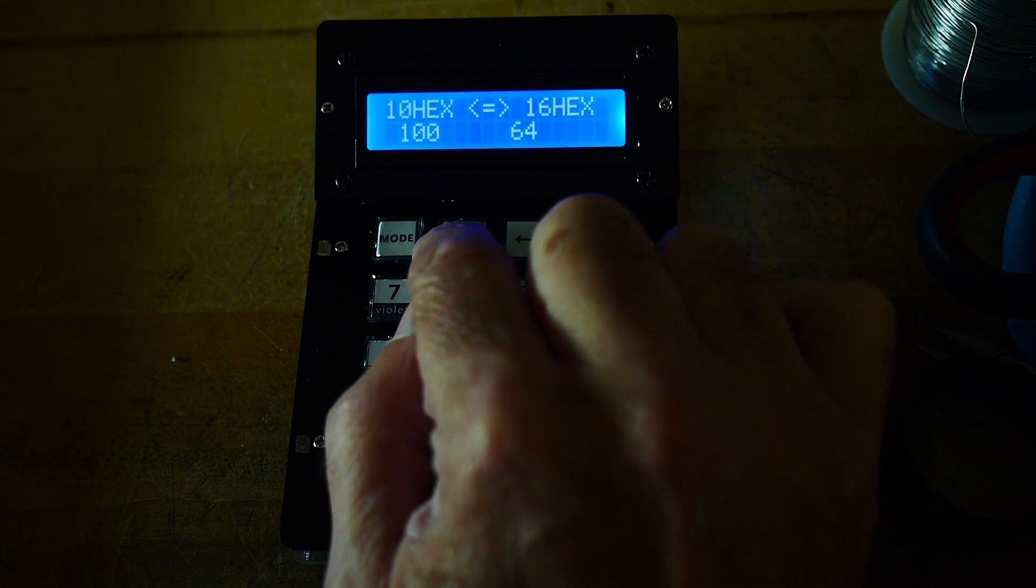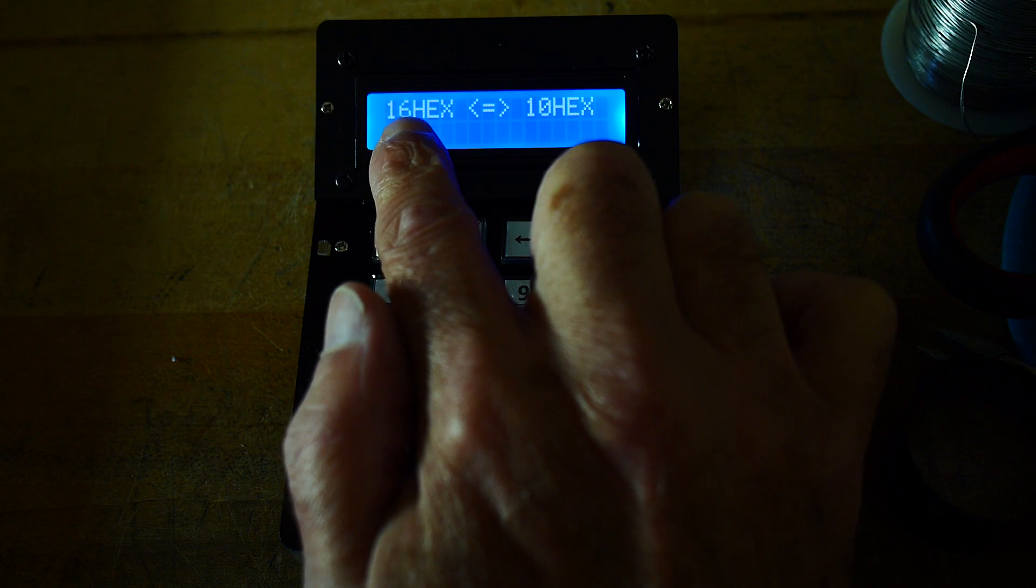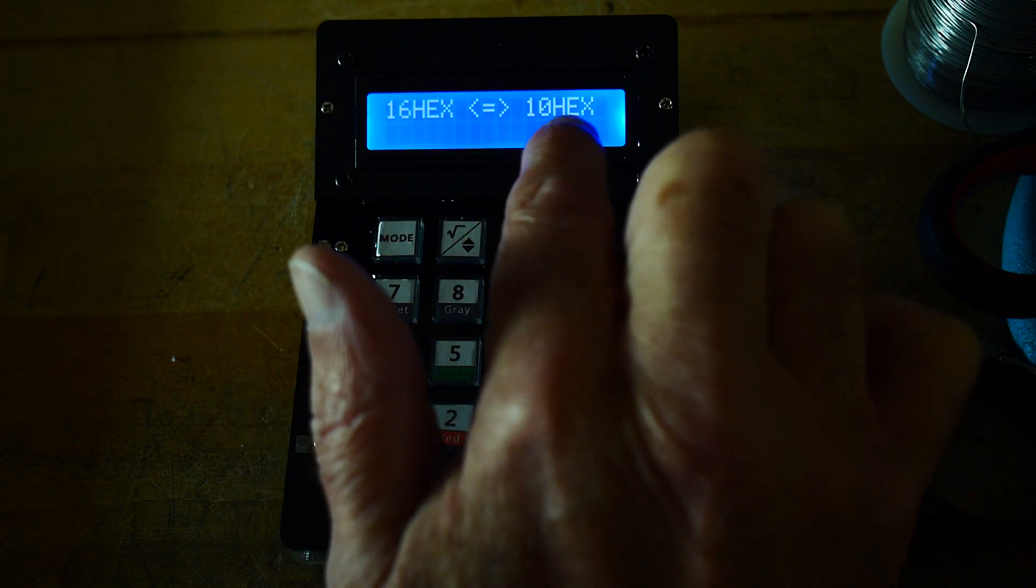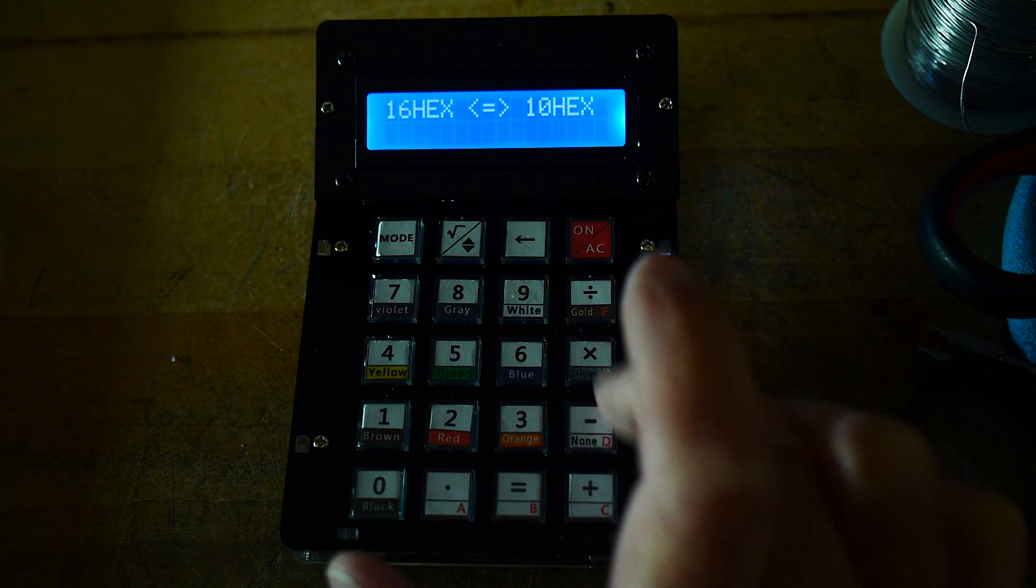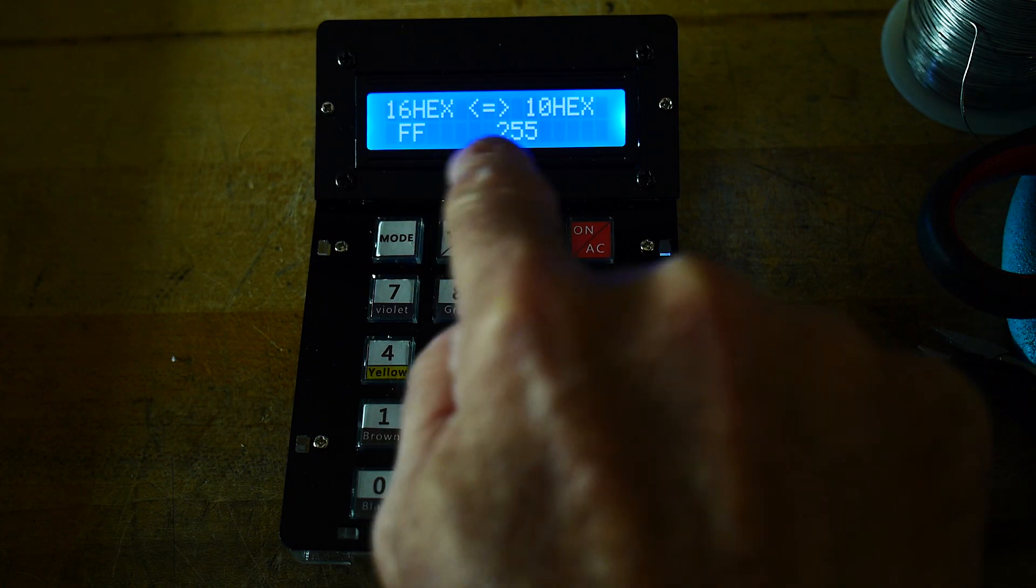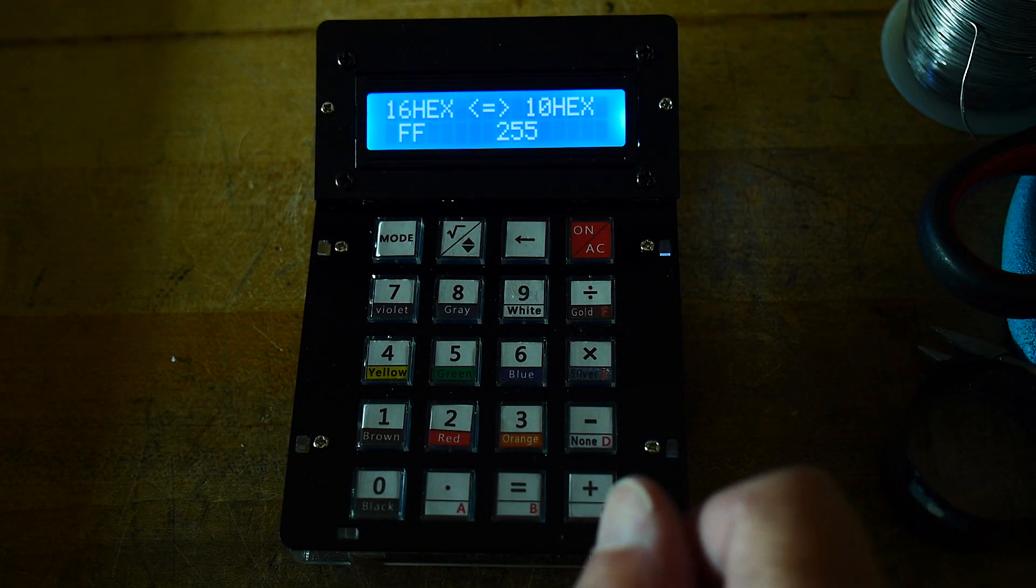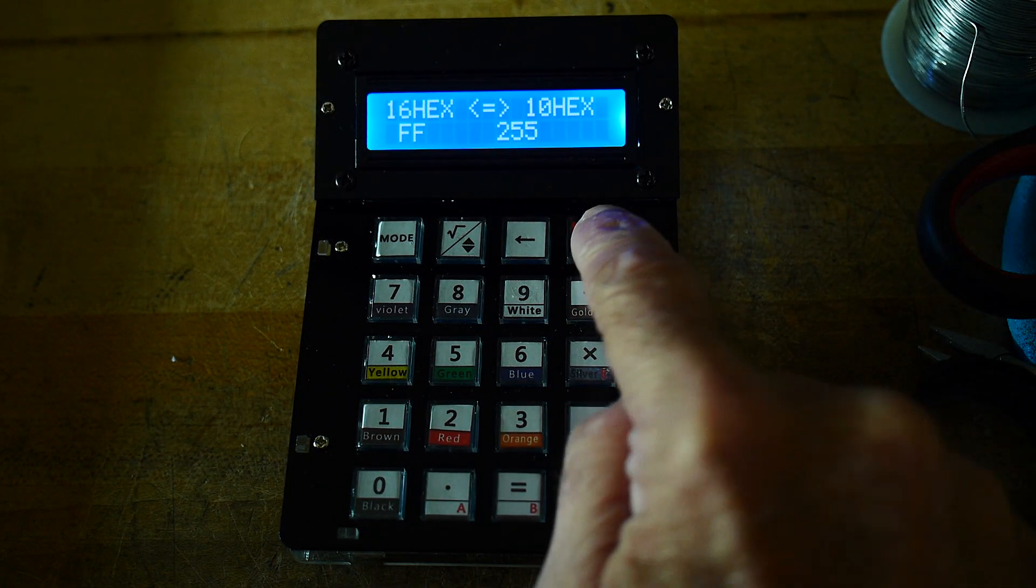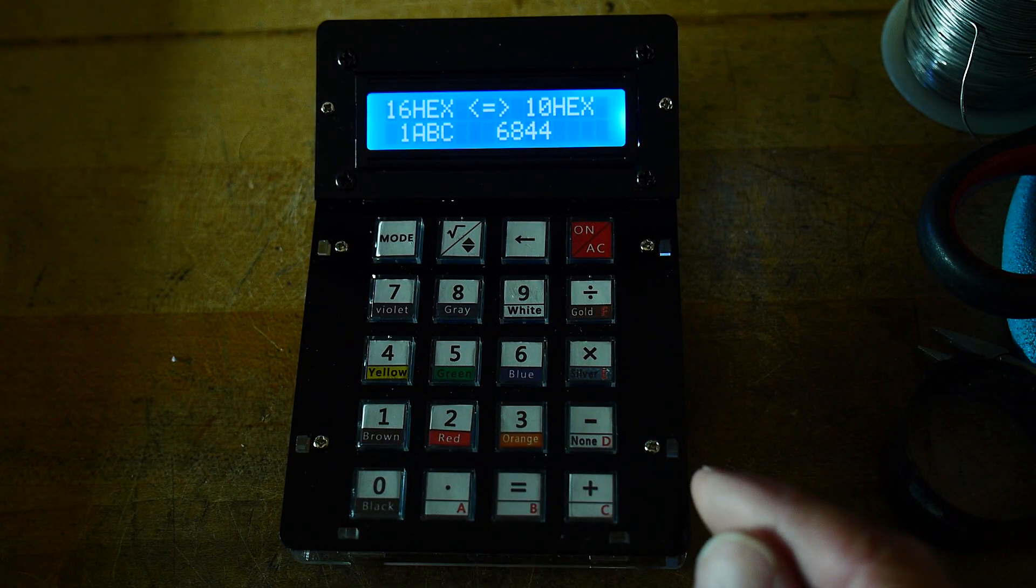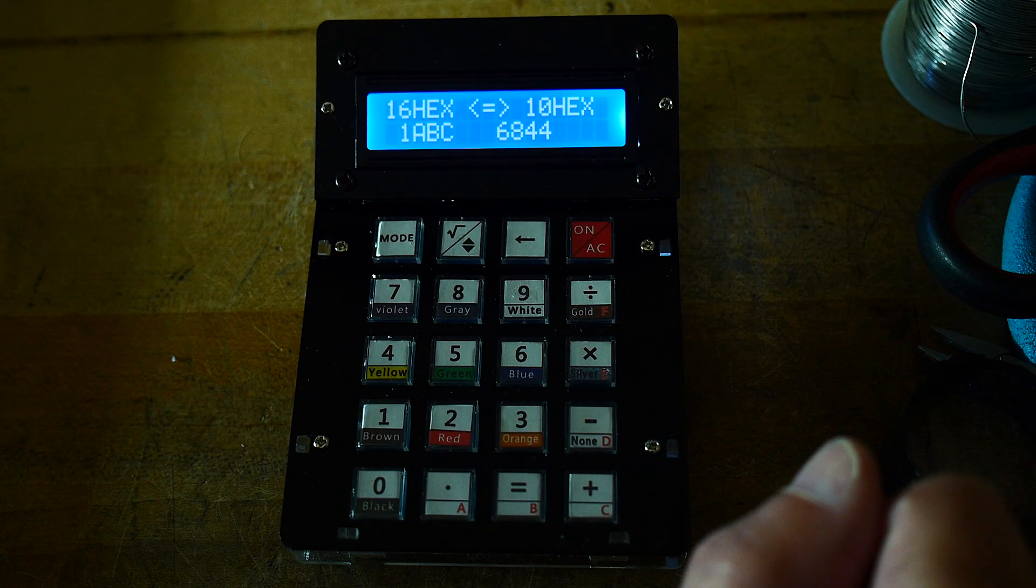And if you hit the arrow swap here, it'll do 16 hex to 10 hex, which is base 16. So now these little things over here, right? So if you put in say FF, which is this key here, it'll say 255. So you can put in a hexadecimal number. You can say 1ABC and it's 6844.